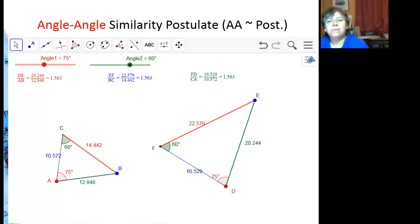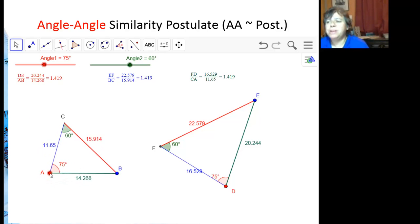We're going to start with the angle-angle similarity postulate. And basically I've got two triangles here. And you can actually adjust the points on A and B on either triangle. The only thing I fixed is that both angles have to be congruent. So two of these angles. I didn't even set what the third angle has to be.